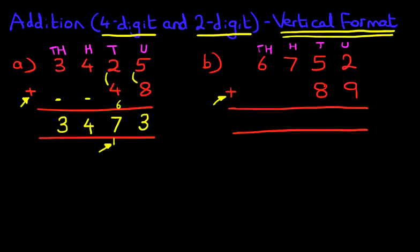So first we begin by adding the units. 2 plus 9. So what is 2 plus 9, or 9 plus 2? You can change it around. The answer is 11. 1, 1. That is 11.